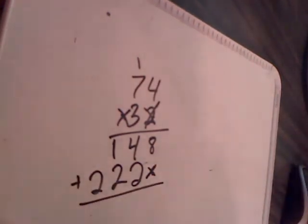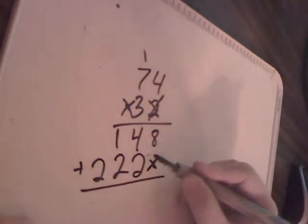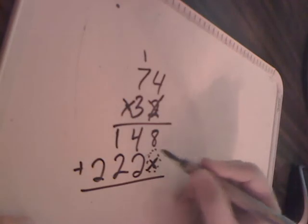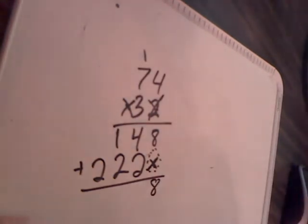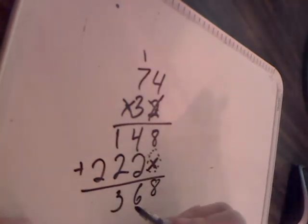Now you have to add all these numbers up. We already had this 8 and we said that this could be an x or a 0. 8 plus nothing is 8. 4 plus 2 is 6. 2 plus 1 is 3. And 2 plus, well, nothing is 2.